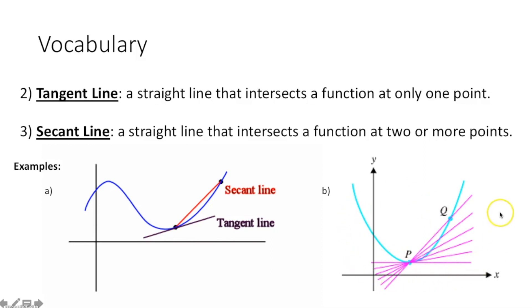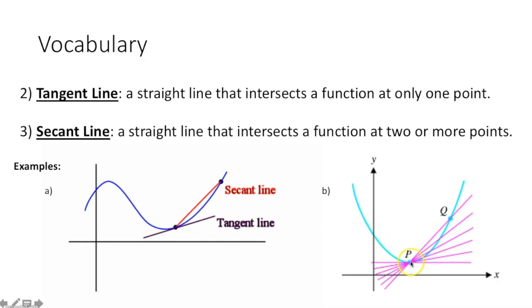This is actually a way you can estimate the slope of a particular function at a given point. If I wanted to find the slope at point P, what I could do is choose two points P and Q, then keep changing Q so it's closer and closer to P, and calculate the slopes between those two points to estimate the slope of the function at point P. That's something we use in calculus.